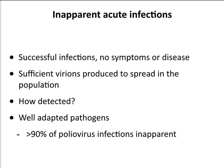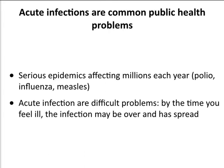Remember we talked about inapparent infections — infections where the virus is in you and replicating, but you can't tell. This happens for both acute and persistent infections. They're successful infections where there are no symptoms but viruses are replicating. We know this because we take serum from people in a population, see antibodies to a virus, and they have not had the disease. Many infections with poliovirus are asymptomatic. This is characteristic of well-adapted pathogens — they come in, don't cause disease, replicate, and move on to another host. Disease is often accidental. Inapparent acute infections are quite frequent.